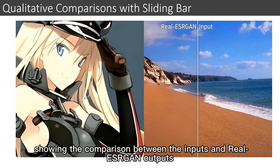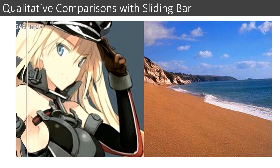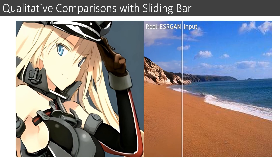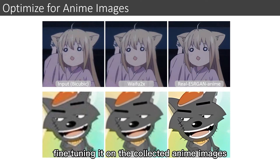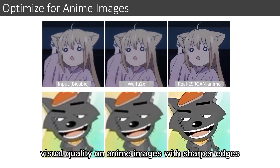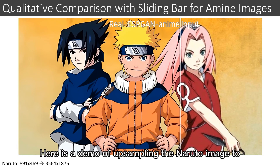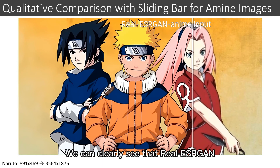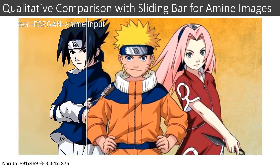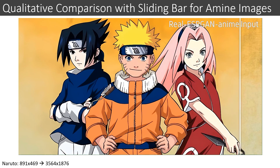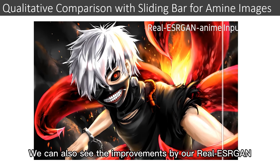Here is a video showing the comparison between inputs and Real-ESRGAN outputs — we can see the effectiveness of Real-ESRGAN in removing blur and noises. We also optimize Real-ESRGAN for anime images by fine-tuning it on collected anime images, obtaining better visual quality with sharper edges. Here is a demo of upsampling a Naruto image to 4K resolution, clearly showing Real-ESRGAN removing blurs and unknown noises, with further improvements visible on rendered anime images.